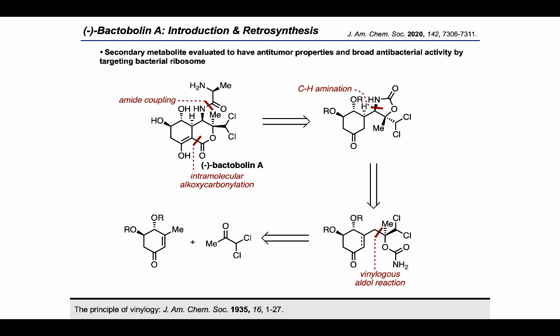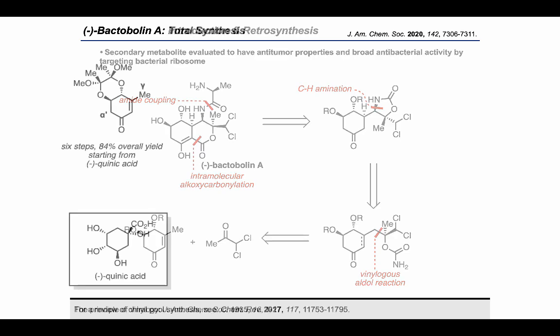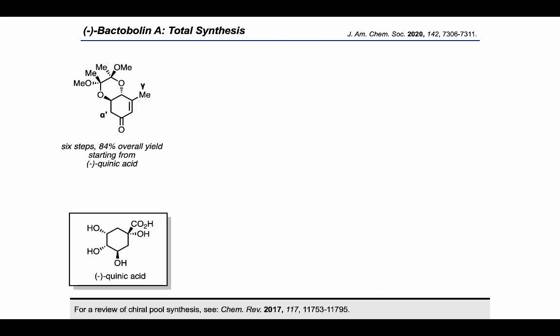In the synthetic direction, the authors begin with this protected diol, which is accessible through a six-step sequence that starts from quinic acid. As quinic acid itself is available in an enantiopure form, this synthesis falls within the realm of chiral pool synthesis, which has recently received very nice coverage in a review in ChemRev.